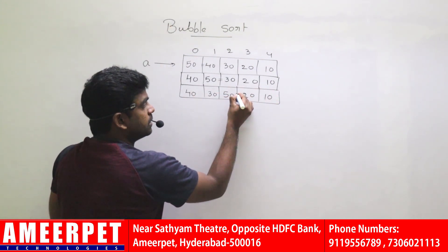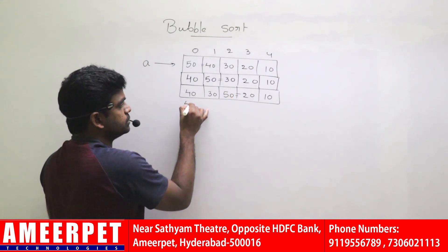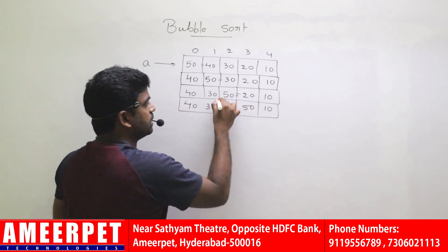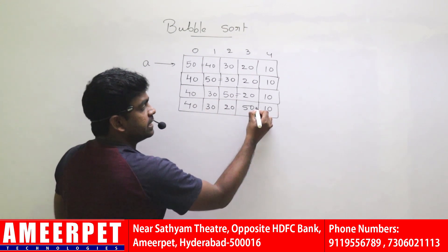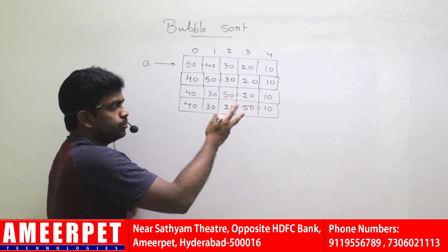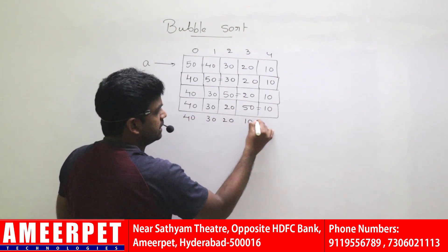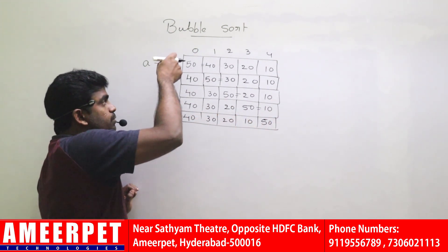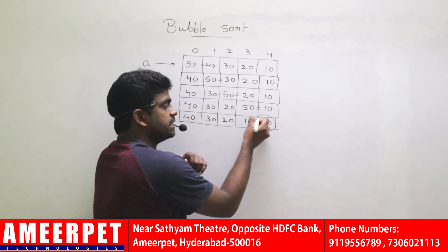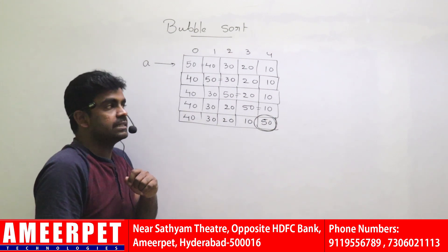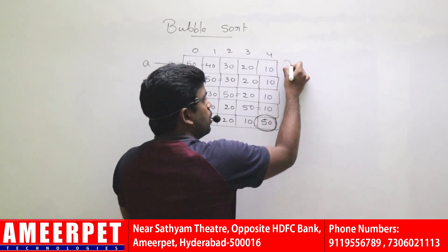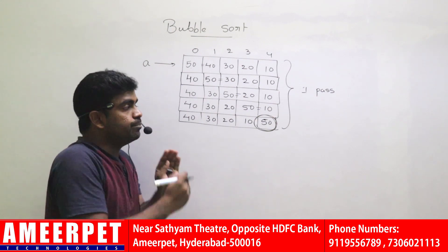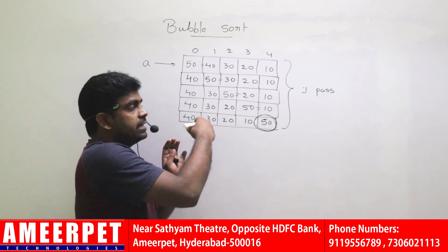Next, 50 and 20 compare, values become 40, 30, 20, 50. In the last comparison of this pass, 50 is compared with 10, both swap, and values become 10 and 50. So with four comparisons, one highest element — 50 — has bubbled to the last location. This is called one pass. For each pass, the highest element in the list bubbles to the last location and gets sorted.